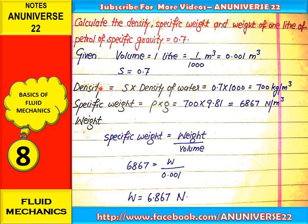Firstly, find the density. Specific gravity is defined as the ratio of density of the liquid upon the density of the standard liquid, which is water at 1000 kg per meter cube. So density equals 0.7 into 1000, that is 700 kg per meter cube.